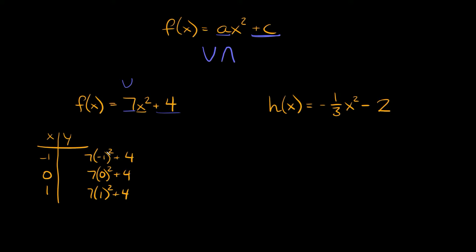Negative 1 squared is positive 1, so positive 1 times 7 is positive 7, and 7 plus 4 is 11. For x equals 0: 0 squared is 0, 0 times 7 is 0, and 0 plus 4 is 4. For x equals 1: 1 squared is 1, 7 times 1 is 7, so 7 plus 4 is 11.